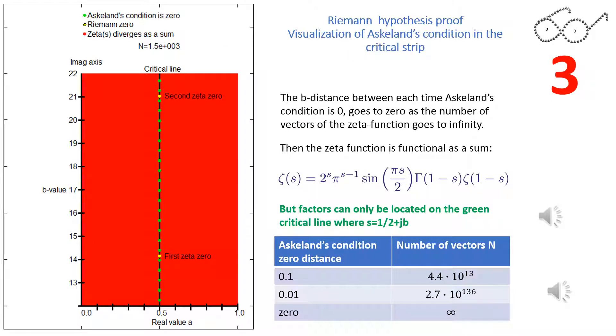This slide starts with n equals 1500. You can see the n number above the red area. All the green dots show locations where Askeland's condition is 0. As n increases you will see that the distance between the green dots decreases. Eventually as n goes to infinity the distance between the green dots goes to 0. Then Askeland's condition is 0 for all factors of the zeta function.